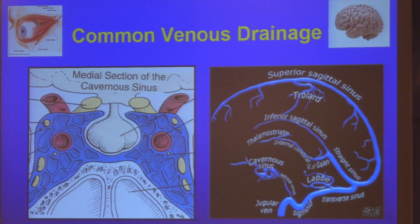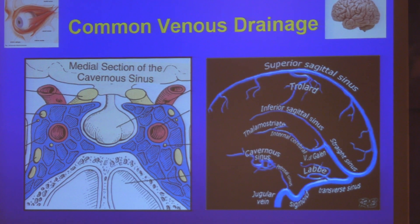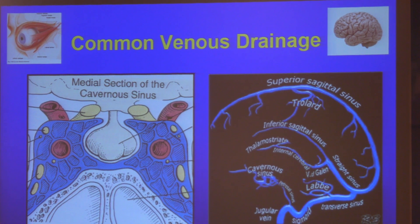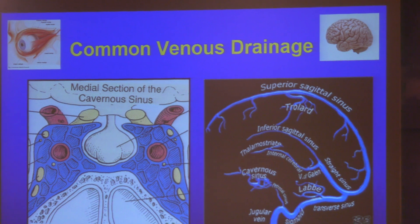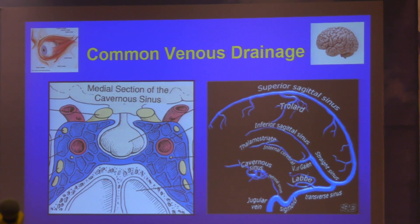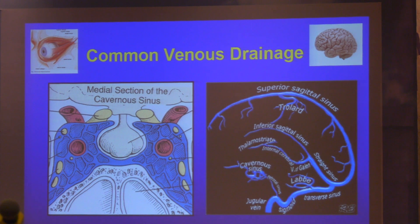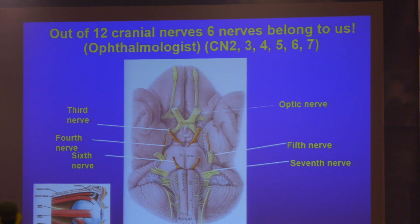Regarding venous drainage, the cavernous sinus has all our cranial nerves on the lateral wall. The superior sagittal sinus and inferior sagittal sinus — all these things are connected to the brain and the eye. Coming to the cranial nerves, out of 12, 50% belong to us. The optic nerve is the visual trunk, the cable of the eye.